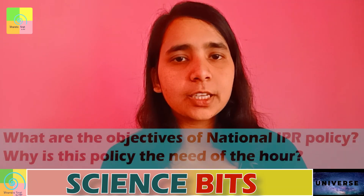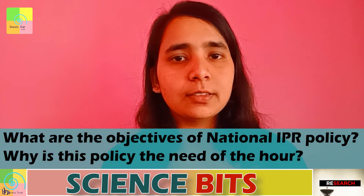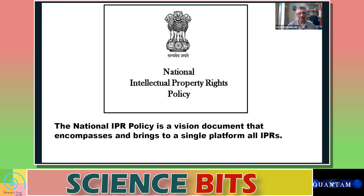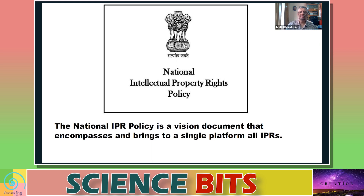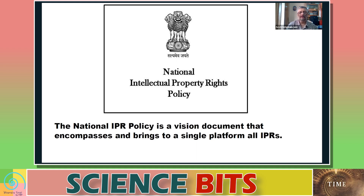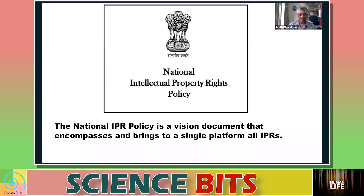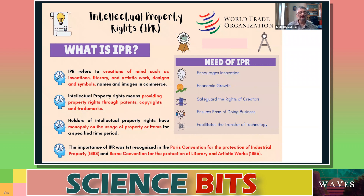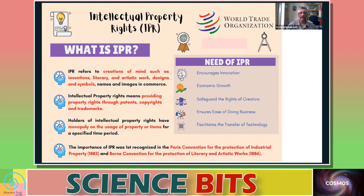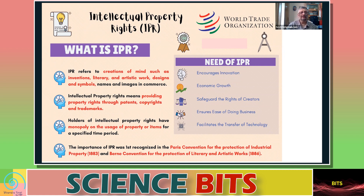Today's question is: what are the objectives of the National IPR Policy? The National Intellectual Property Rights Policy is a vision document encompassing and bringing all aspects of intellectual property rights onto one platform. This policy has been made by the Government of India recently. So first, let us understand what is IPR — Intellectual Property Right. Intellectual property right refers to creations of the mind, such as inventions, literary and artistic works, designs, symbols.